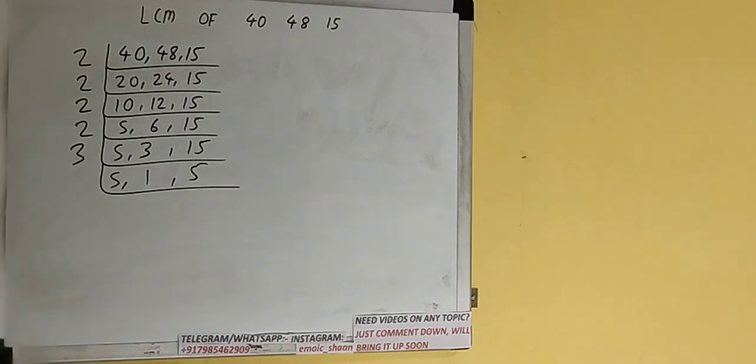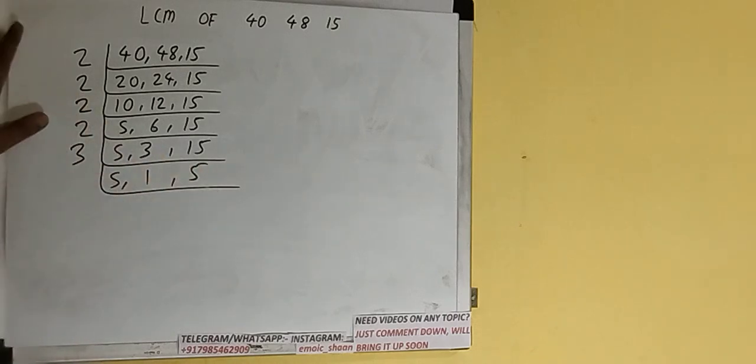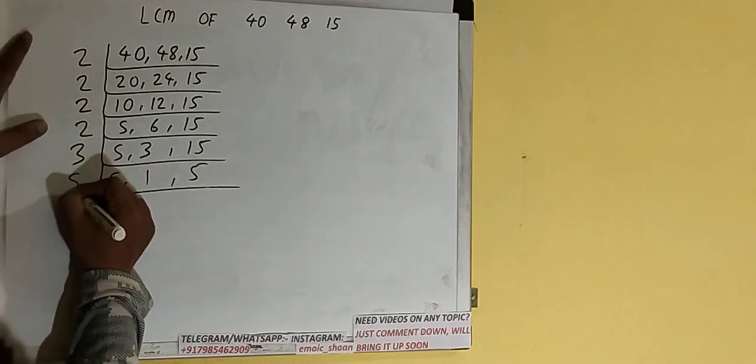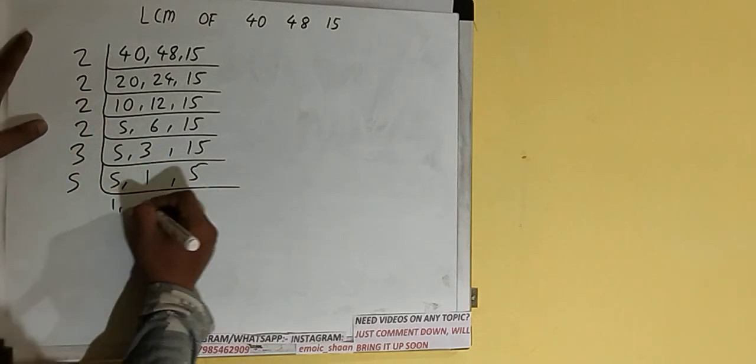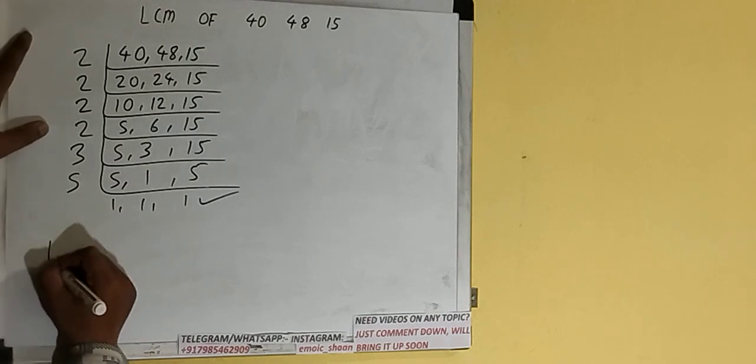So we check with the next lowest prime number, which is 5. The first and the last numbers are divisible by 5, so we divide and we get all 1s. Once we get all 1s, we stop.